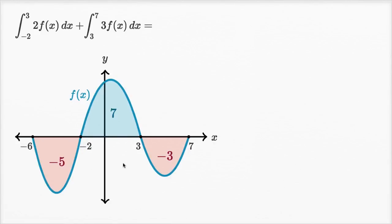In this video we'll do several examples where we evaluate expressions with definite integrals. Here we have the definite integral from negative two to three of two f of x dx, plus the definite integral from three to seven of three f of x dx. All we know about f of x is the graph of y equals f of x from x equals negative six to x equals seven.